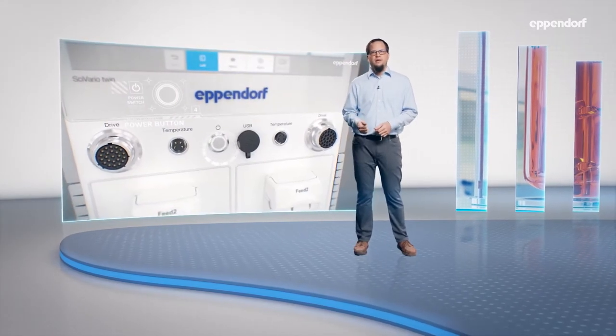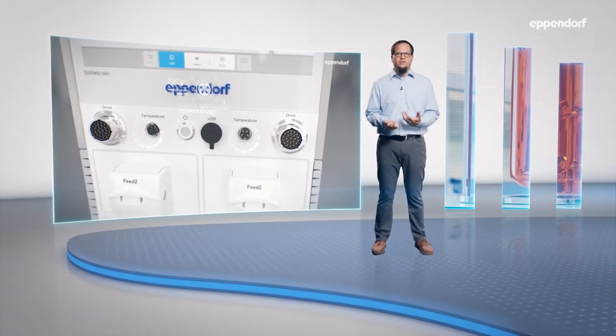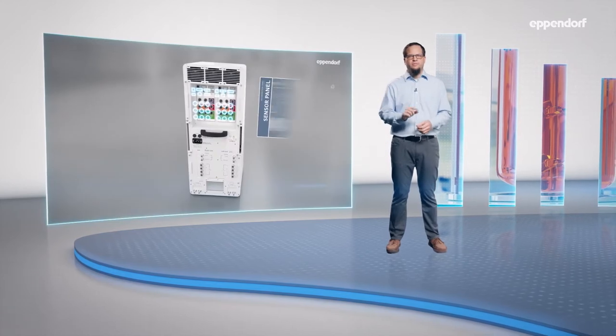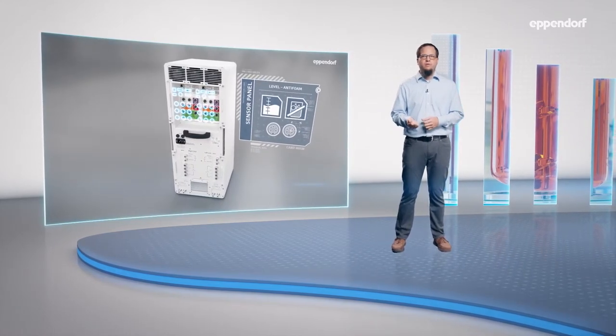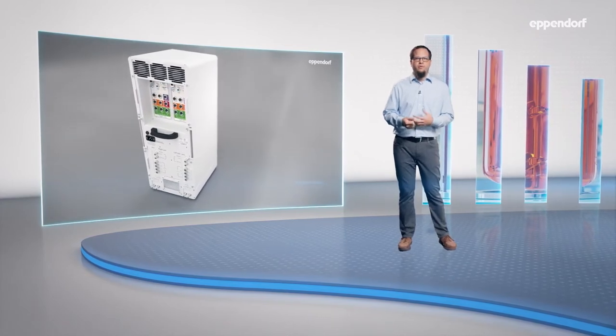The key functions of the base unit are the control of temperature, agitation, gassing as well as the addition of liquid substrates. Monitoring of the main critical process parameters like pH, DO, temperature helps to identify any issues and track the process performance.